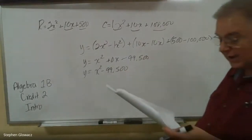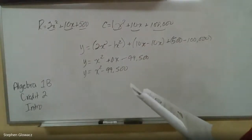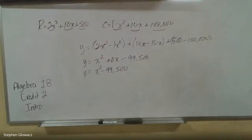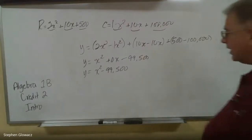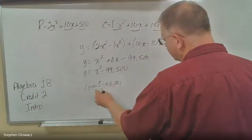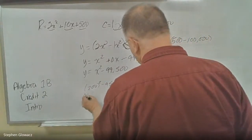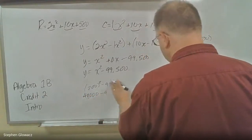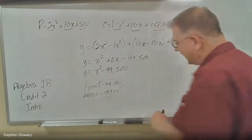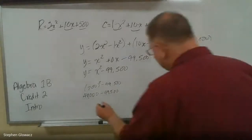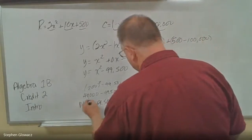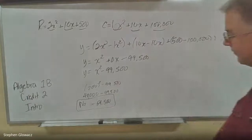Now it says below, if you manufacture and sell 200 bicycles in January, will your company make a profit? Well, that's important because if a company doesn't make a profit, you're not going to be in business very long. So for 200 bicycles, we put 200 in for X. 200 squared, which means 200 times 200, would be 40,000. And we've got 40,000 minus 99,500, which would be negative 59,500. Negative means we've lost money. So did we make a profit? No. There was a loss of $59,500.